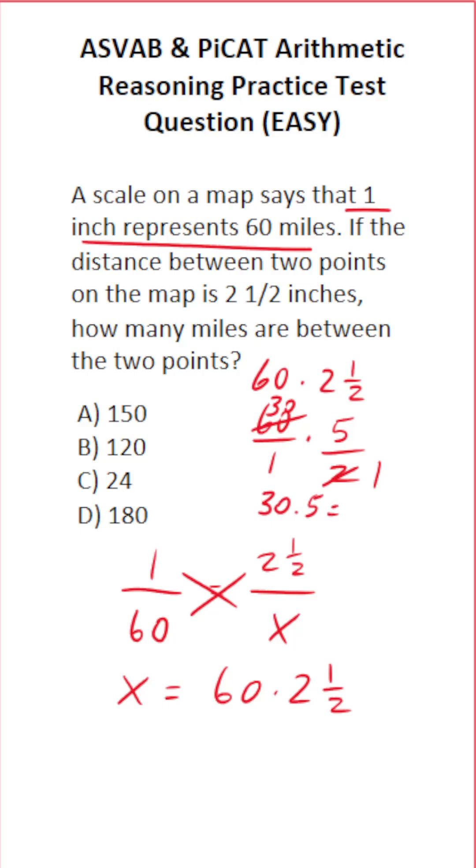30 times five is 150. So 60 times two and a half is 150. In other words, how many miles are between the two points? It's going to be 150 miles.